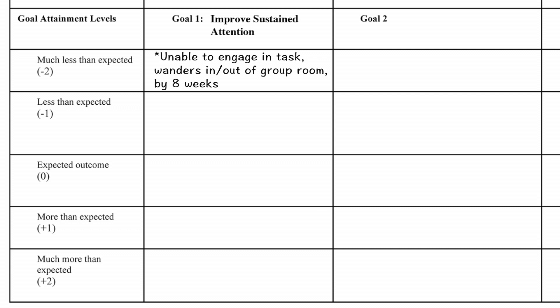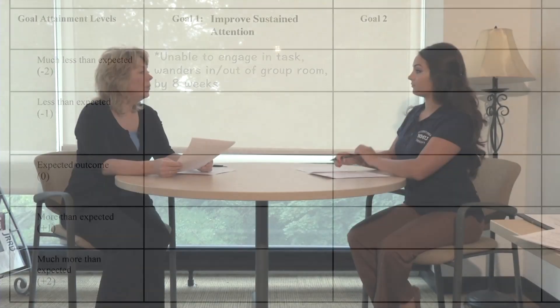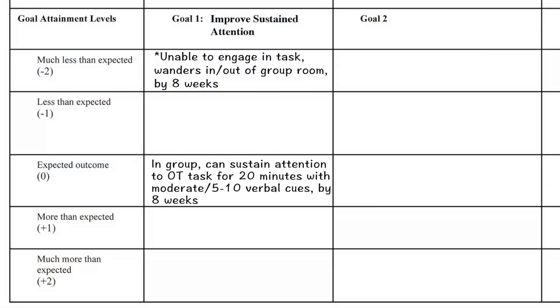What do you think is a realistic outcome for Kevin? What do you think you can help him do in the next eight weeks? I think he could sustain attention during OT group for 20 minutes with moderate verbal cues. What do you mean by moderate verbal cues? I would say that moderate verbal cues would be five to ten verbal cues with encouragement like 'good job, keep going.' That's our zero, our expected level — go ahead and write that in. Be sure to clarify any ambiguous language so that the rater or raters can easily reevaluate level of goal attainment at a later date.